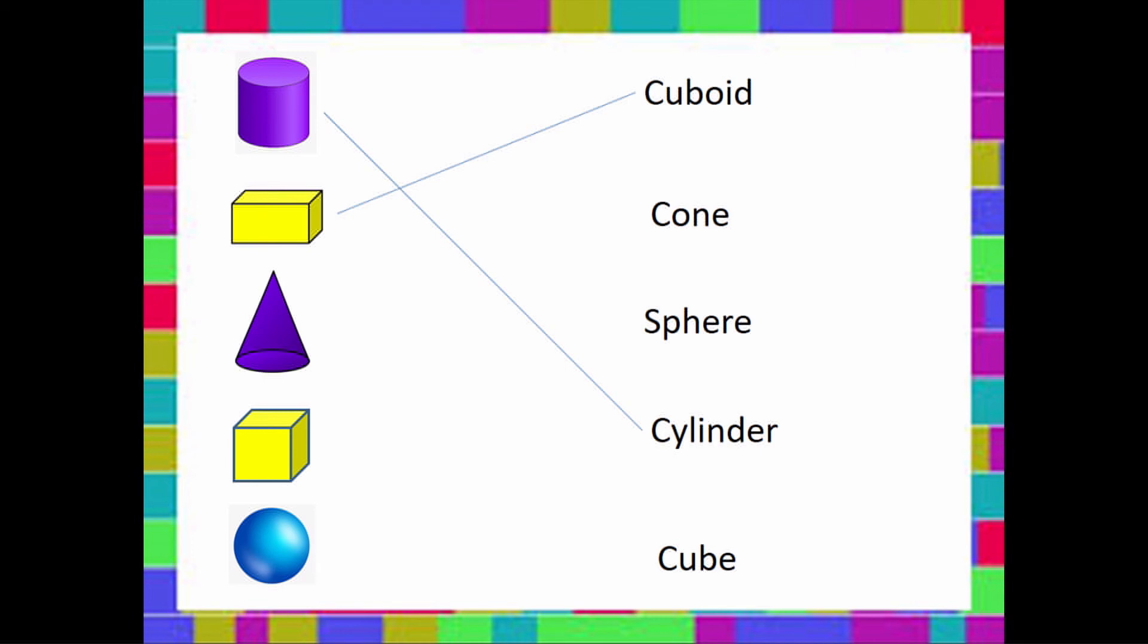I remember that one. It reminds me of a party hat. It must be a cone. Let's look at our next shape. What does it remind you of? It's square, the faces are flat. That's right, it's a cube.